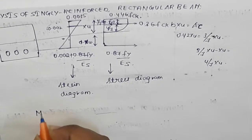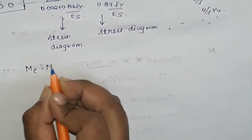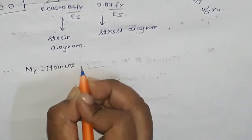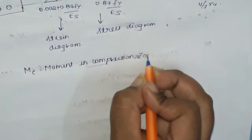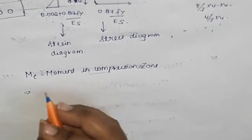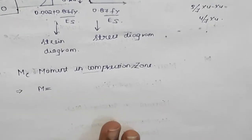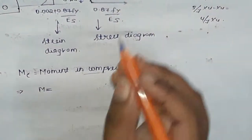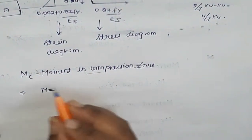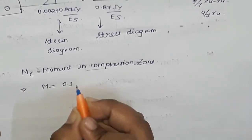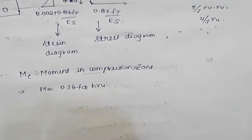Now coming to the calculation of moments — calculation of moments in both the compression zone and tension zone. Moment in compression zone: generally, moment is equal to force into perpendicular distance. The force in the compression zone is 0.36 FCK. So this becomes the moment in the compression zone.